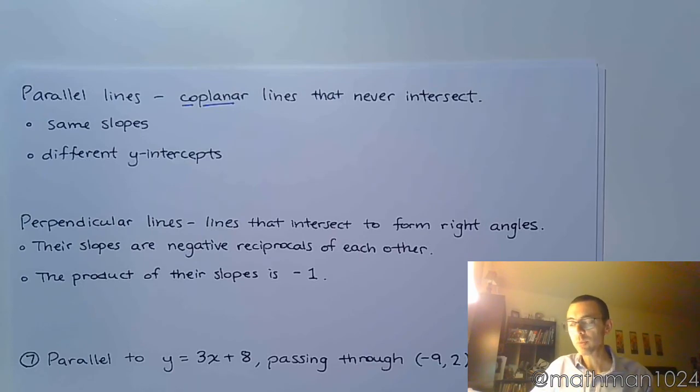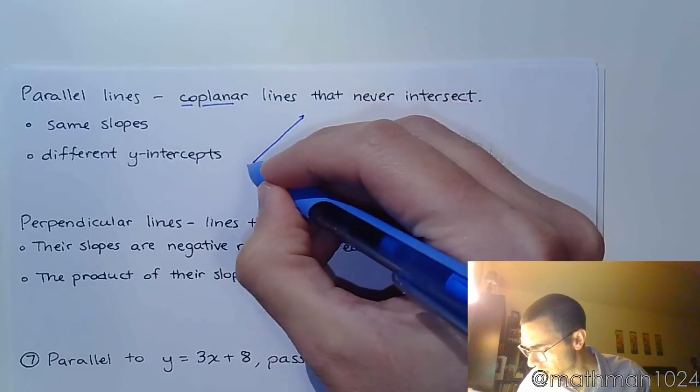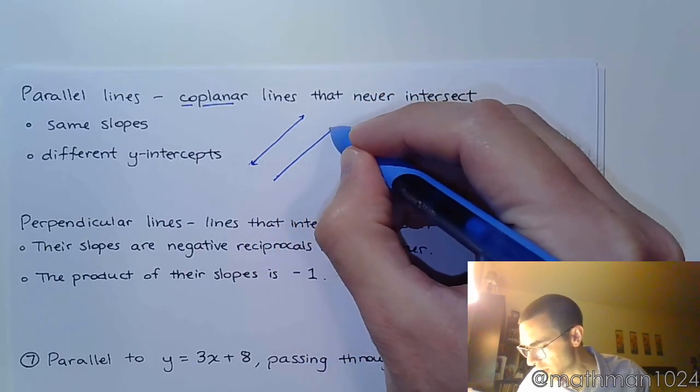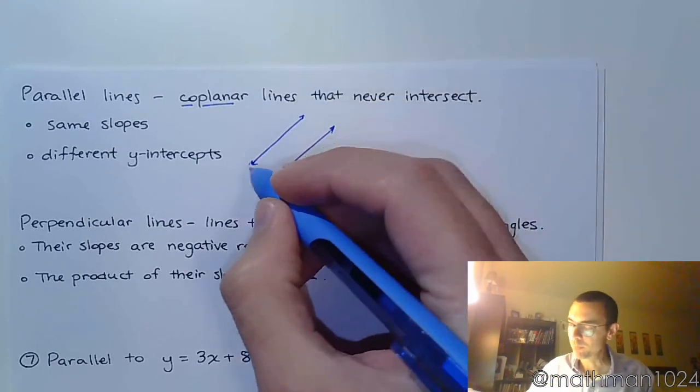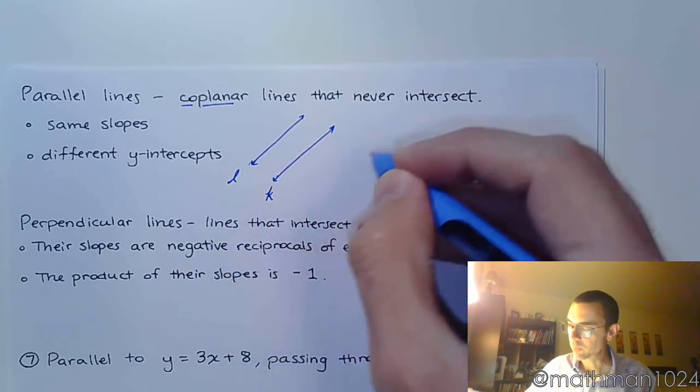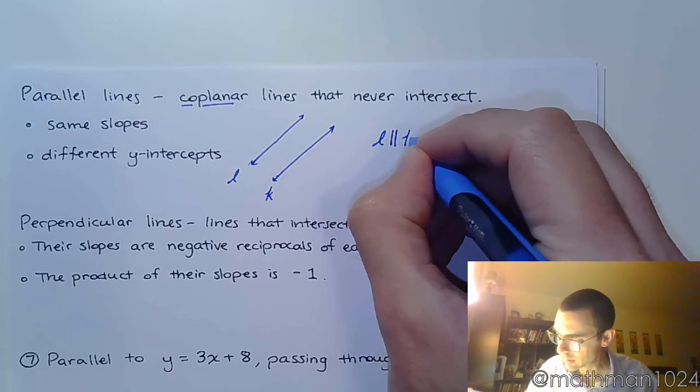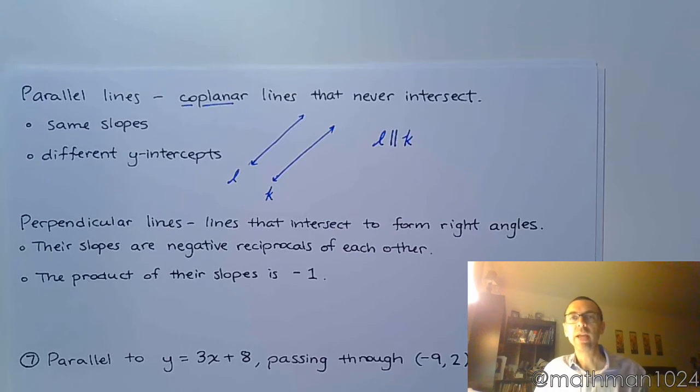They're going to have the same slopes and they're going to have different y-intercepts. So you see these guys looking like this. Sometimes you say they run in the same direction. If this is line L and this is line K, then we would use this notation to say line L is parallel to line K.